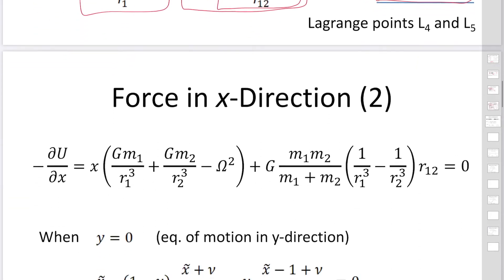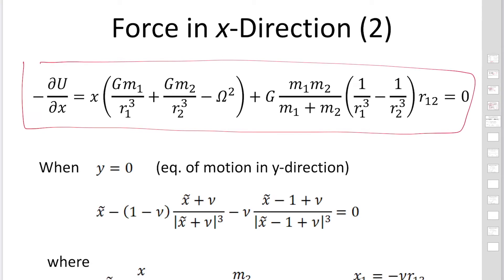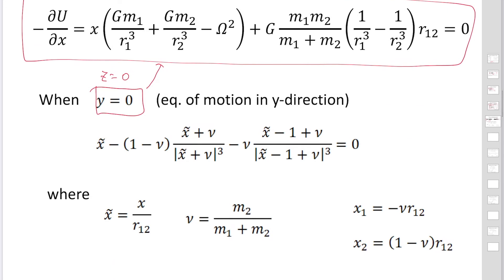Now we consider the other choice. The force in the x direction is exactly the same, but in this case we set y = 0, and we have already shown that z = 0. Substituting these into the equation, it becomes simplified, though still a little bit complicated because of the absolute value signs.